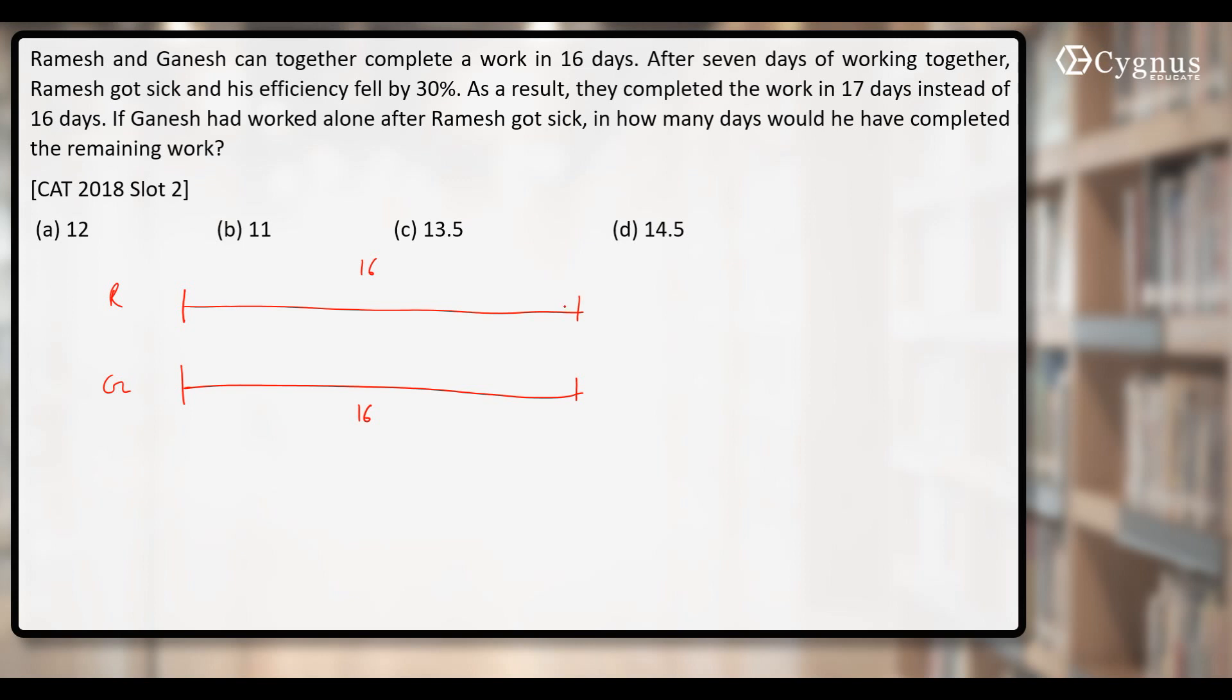After 7 days of working together, Ramesh got sick. That means he'll work at full efficiency for the 7 days. How many more days are left for Ramesh? 9 more days. But he got sick. Because of that, his efficiency fell by 30%. That means he'll be working at a lower efficiency for the remaining number of days.